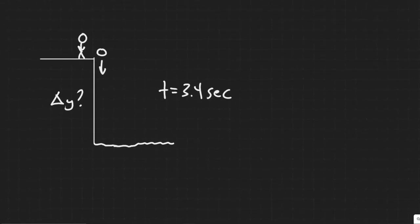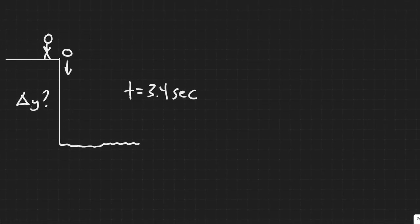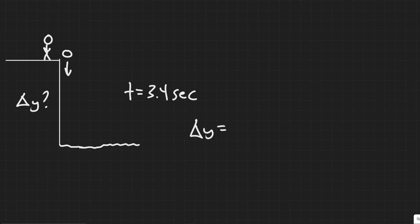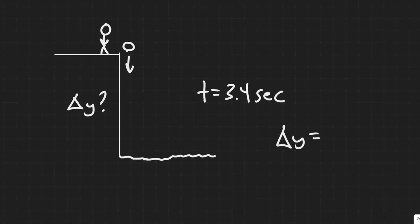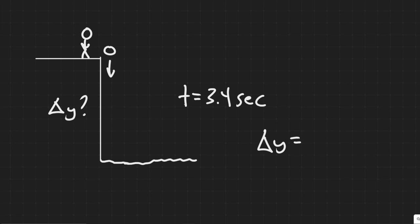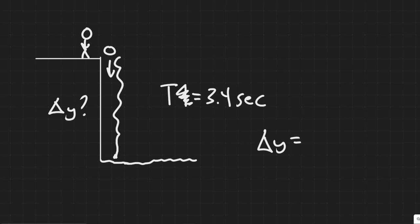We're going to use the formulas for delta y for both the speed of sound traveling upward and the rock falling downward. Let's define our variables: capital T equals 3.4 seconds, which is the total time for the rock to fall down and the sound to travel back up. Lowercase t is the time it takes just to travel downwards.